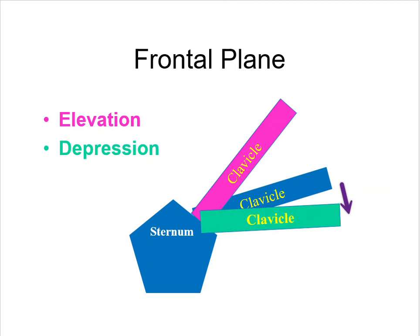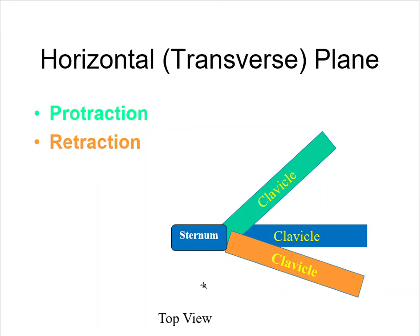We also have in the horizontal or the transverse plane, something called, so this is looking at the top view, looking down on your sternum. And if you kind of hunch your shoulders, that is called protraction, so your clavicles come anteriorly.